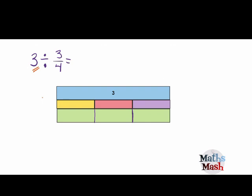Okay, next one. 3 divided by 3 quarters. Again, we've got 3 in the top bar. 3 is made up of 3 ones. Each of the ones is going to be cut up into quarters. But this time we're going to put them into groups of 3 quarters.